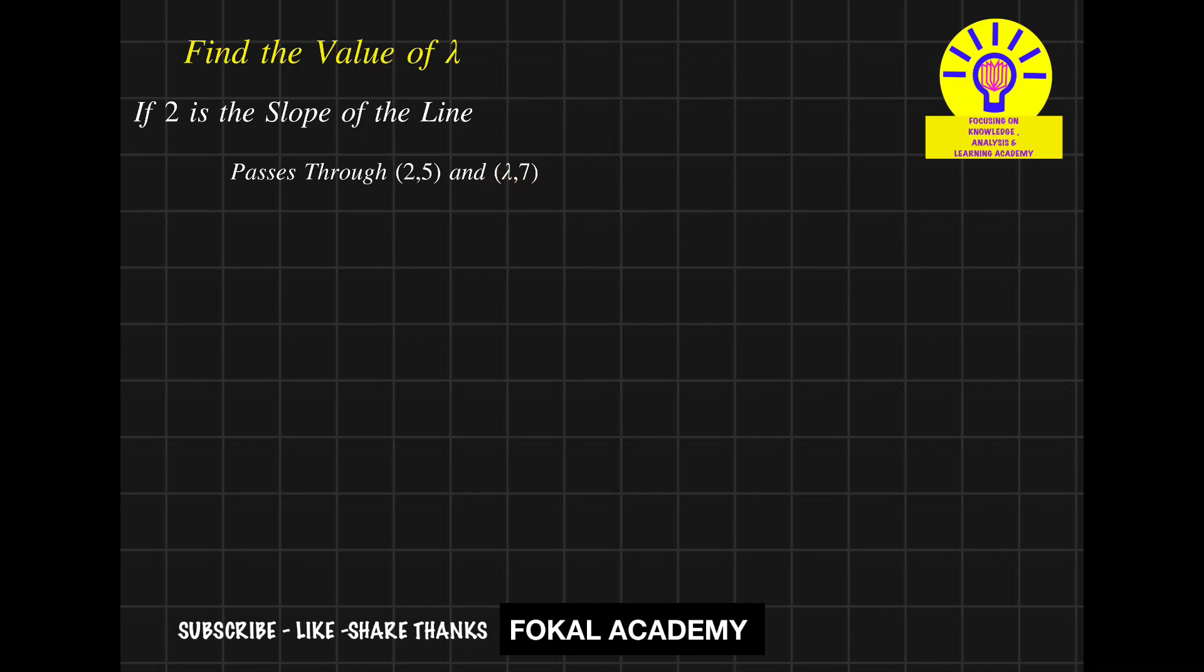We know the slope formula. Let's consider this as point (x1, y1) and this as (x2, y2). The slope formula is m equals the change in y coordinates: y2 minus y1 over x2 minus x1.